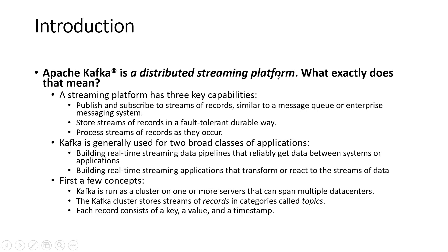Kafka capabilities include publish-subscribe streams of records similar to a message queue or enterprise messaging system, storing streams of records in a fault-tolerant and durable way, and processing streams of records as they occur. It is generally used for two broad classes of applications: building real-time streaming data pipelines and building real-time streaming applications.